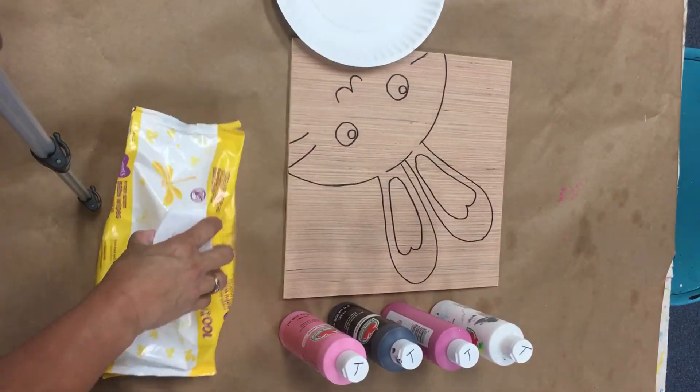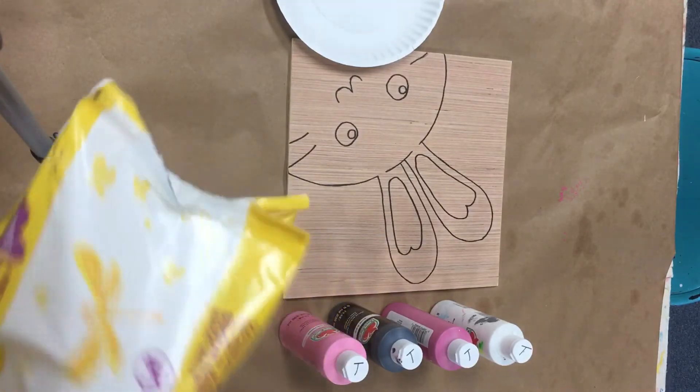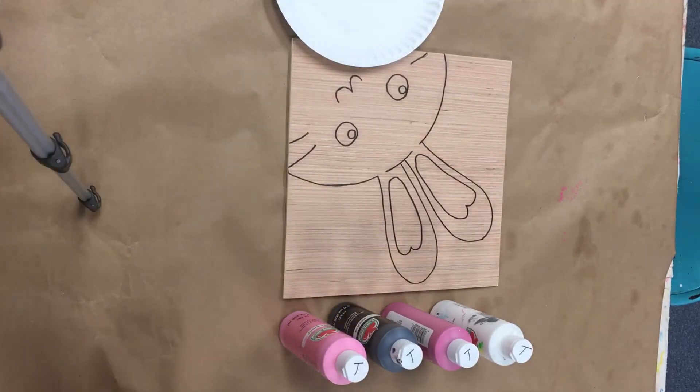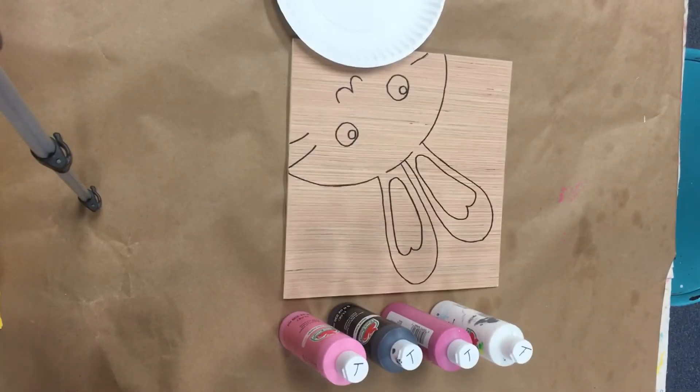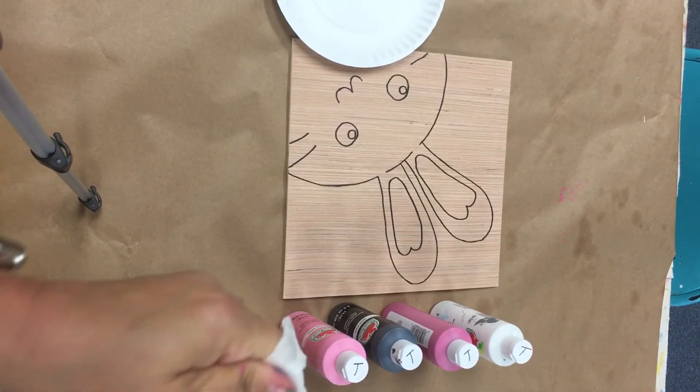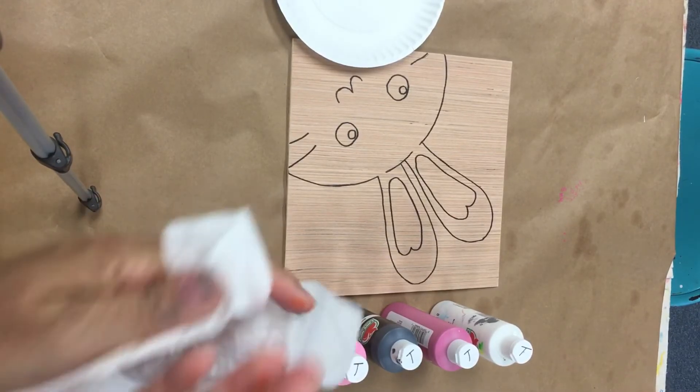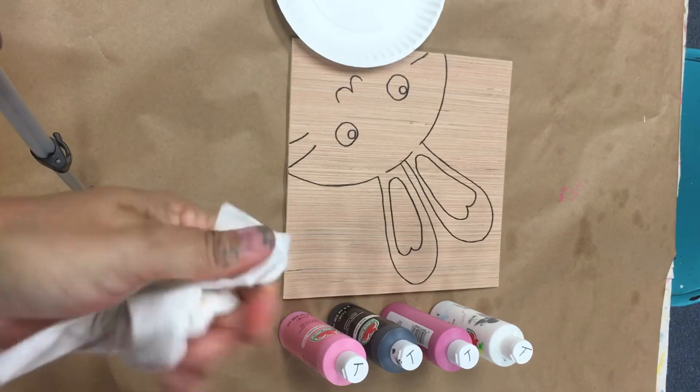So we've got our paper plate and anytime I'm painting I like to have baby wipes nearby. They work good for getting paint off fingers. Also if you get paint in areas you don't want them, you can use a baby wipe to clean up part of that before, make it easier, dry faster. So see how I've got it on my fingers, all the paint washes off right off of your fingers with no problems.